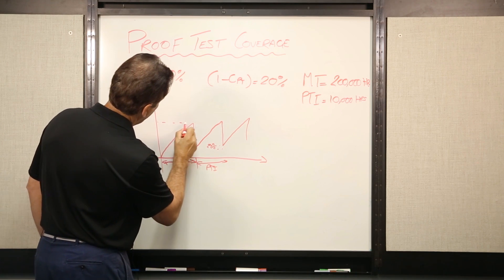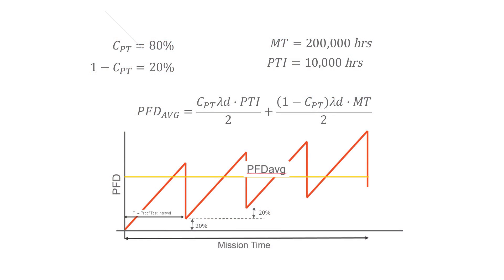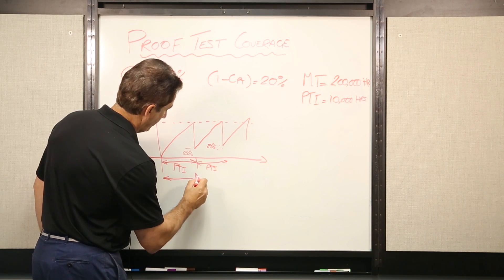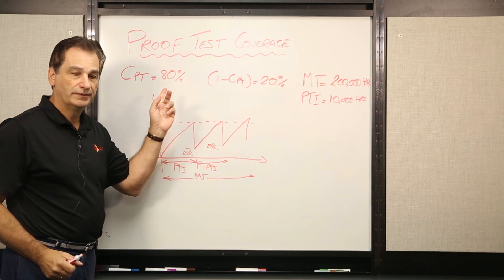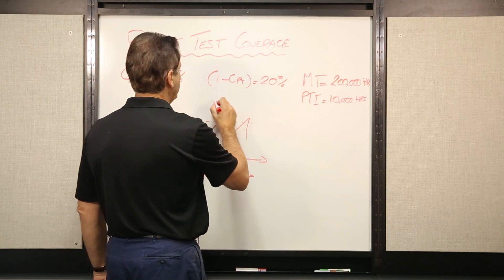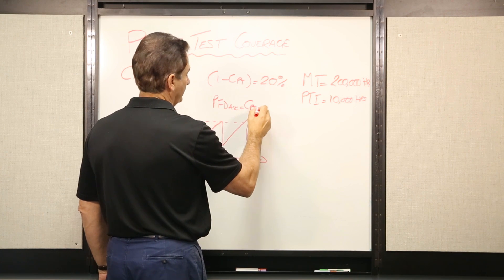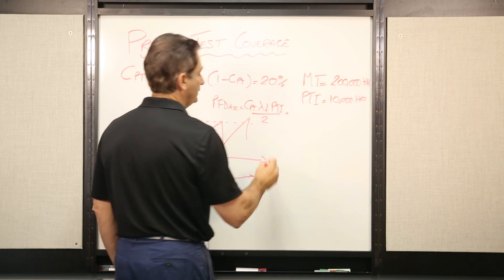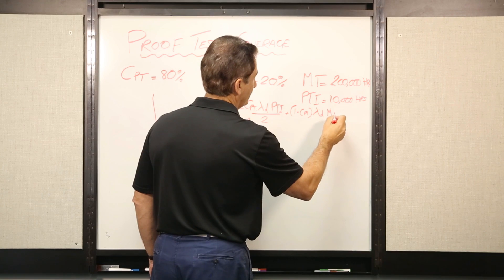Well, over time, our PFD average is going to get worse, and will eventually take us from one SIL level to the next. So, mission time then becomes very important, especially if we have low or relatively low coverage. That's why we have to now modify our formula to be our PFD average of CPT times lambda D times PTI over 2 plus 1 minus CPT times lambda D times MT over 2.